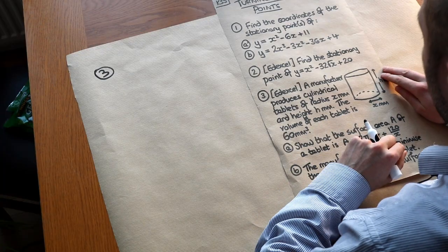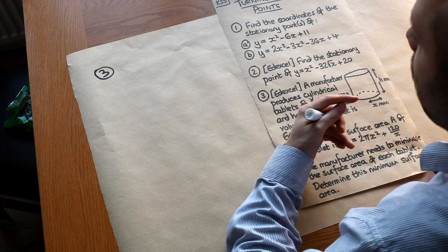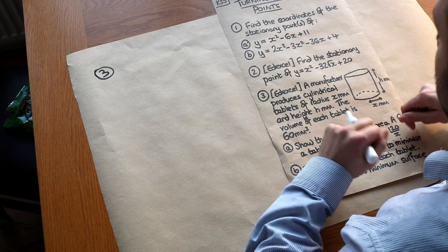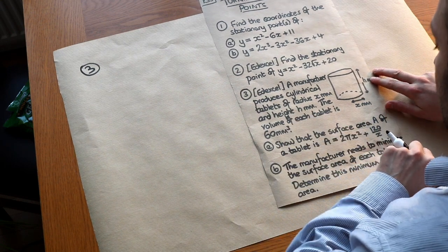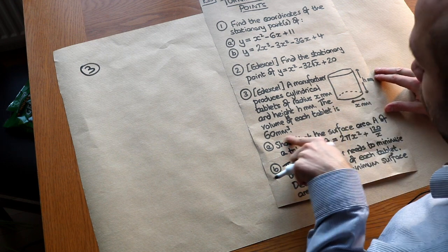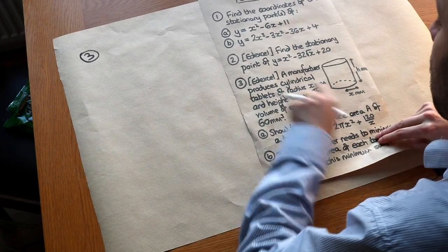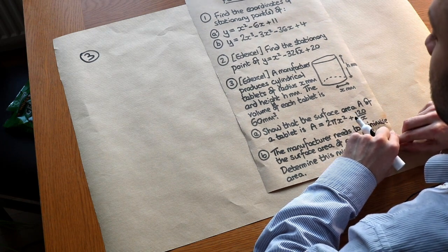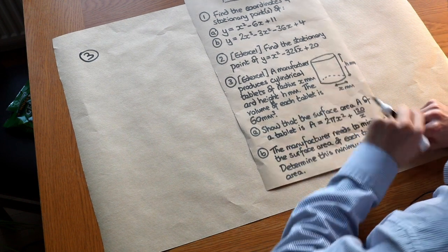This last kind of problem is an optimisation problem. Basically, we're trying to maximise or minimise some physical value, such as a volume or a surface area, subject to some constraint. In this particular case, we want to minimise the surface area of a cylinder, subject to the constraint that the volume must be 60 mm³. A manufacturer produces cylindrical tablets of radius x mm and height h mm, with volume 60 mm³.